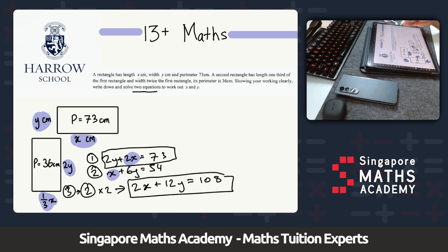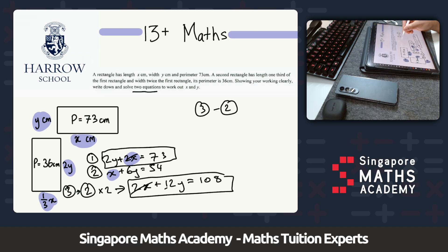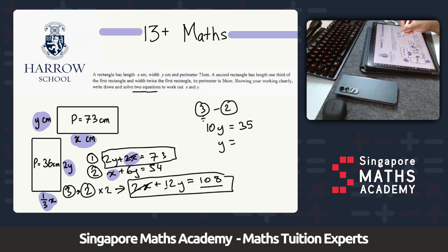Now I'm going to do equation 3 subtract equation 1. The 2x terms cancel to 0x. 12y − 2y = 10y, and 108 − 73 = 35. So 10y = 35, and dividing both sides by 10, y = 3.5 centimeters.